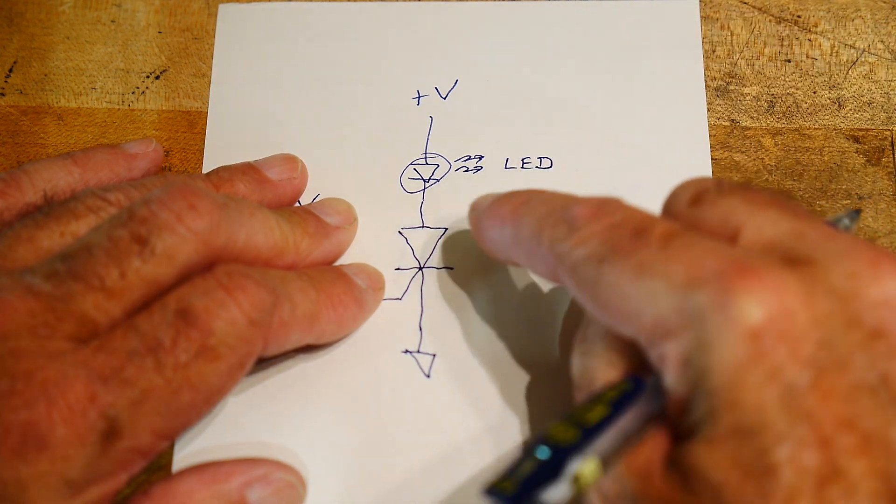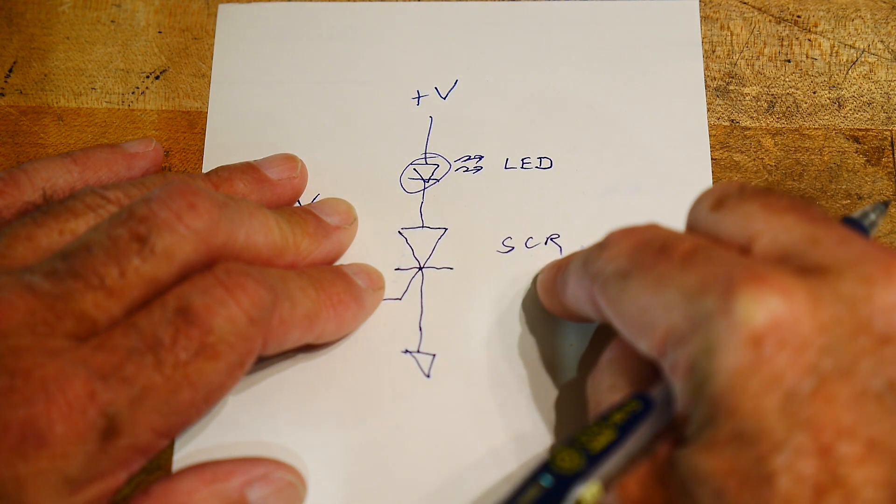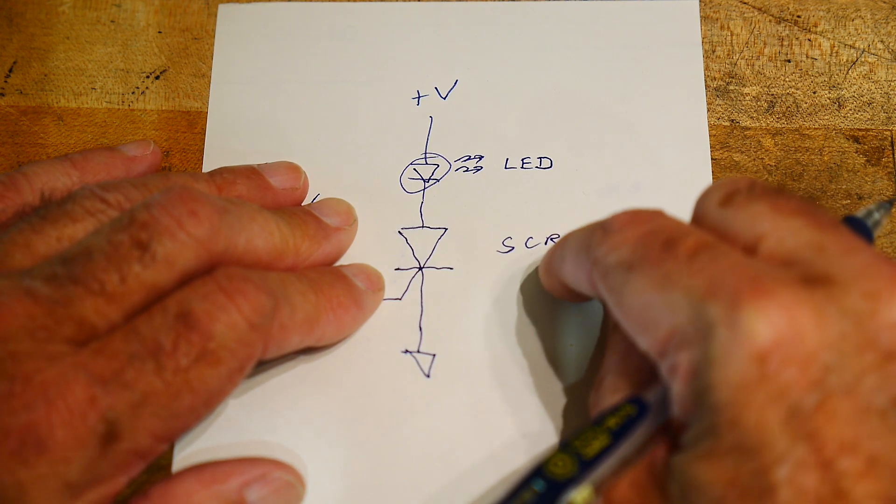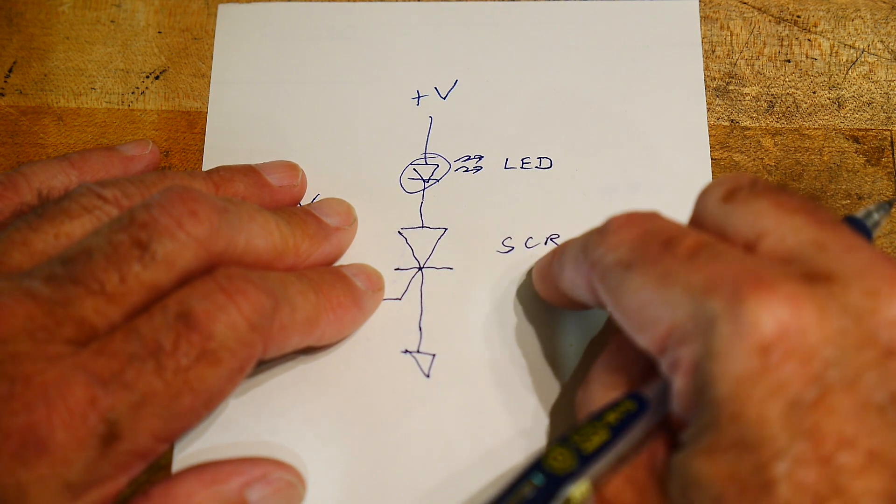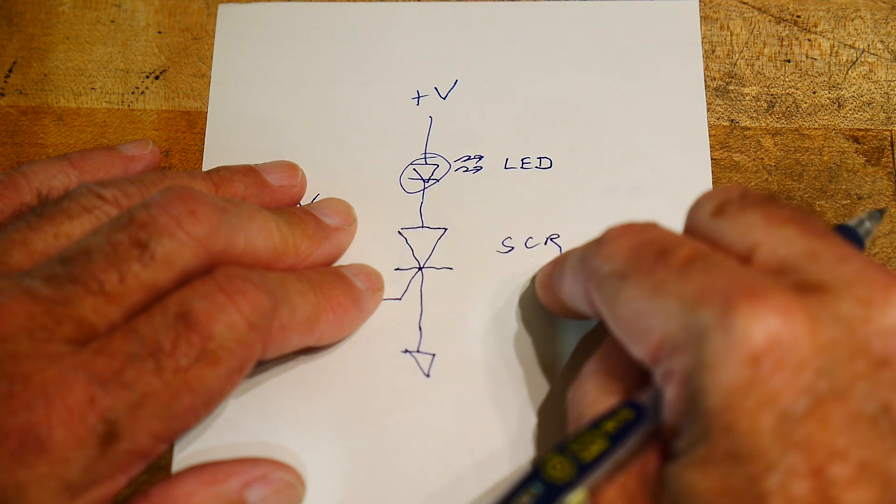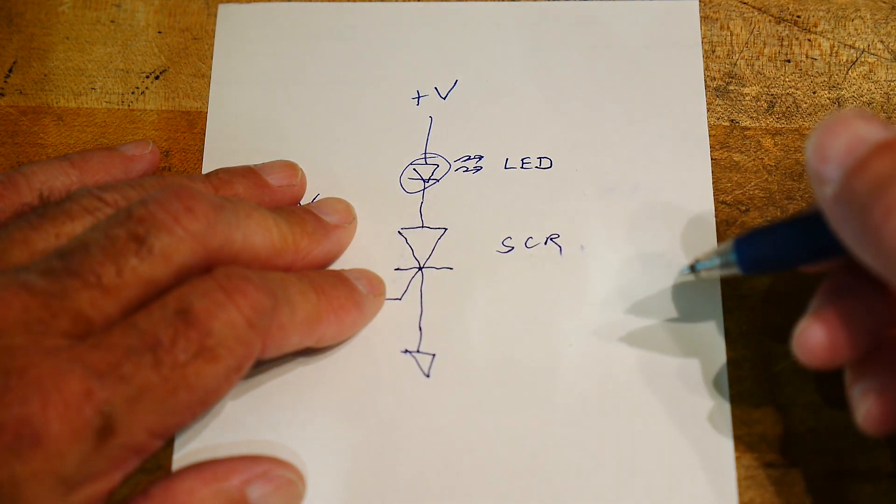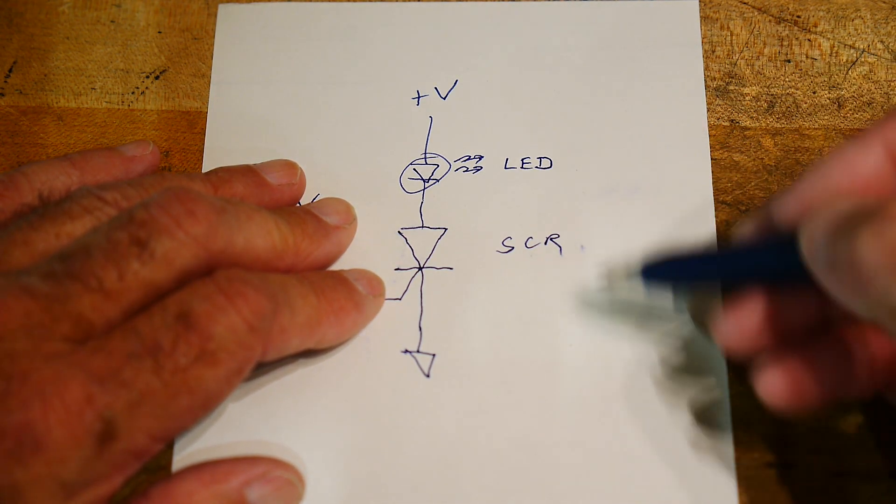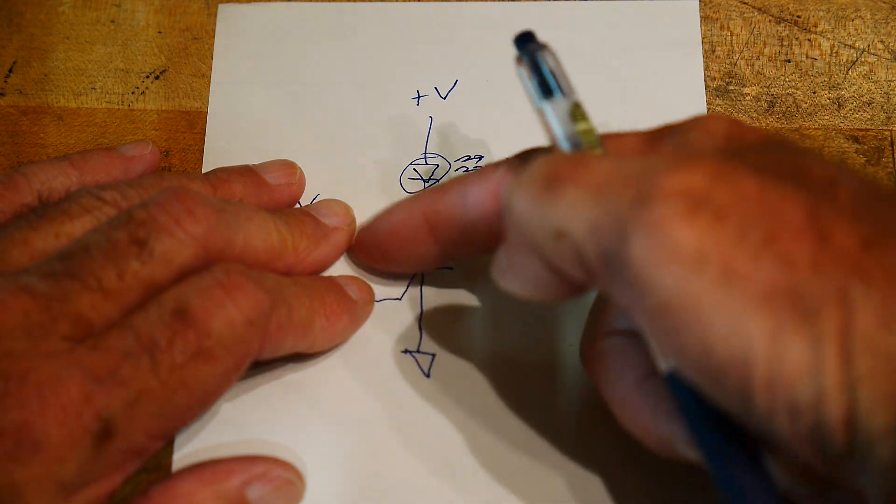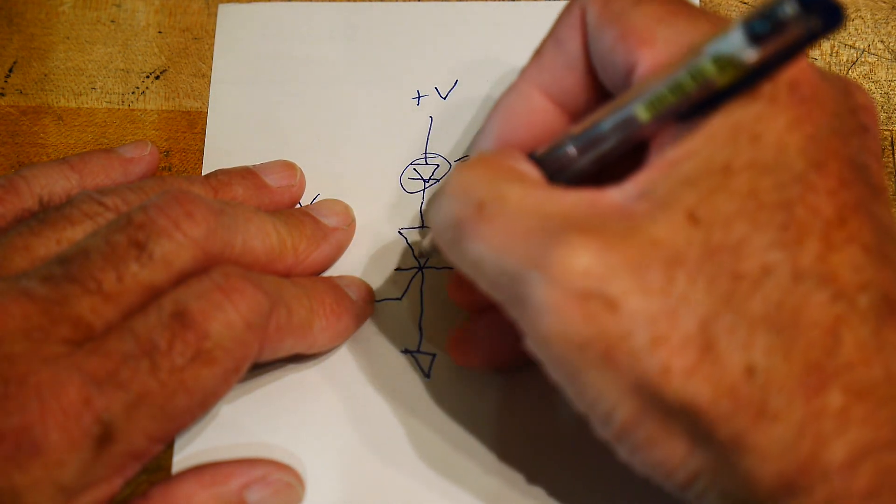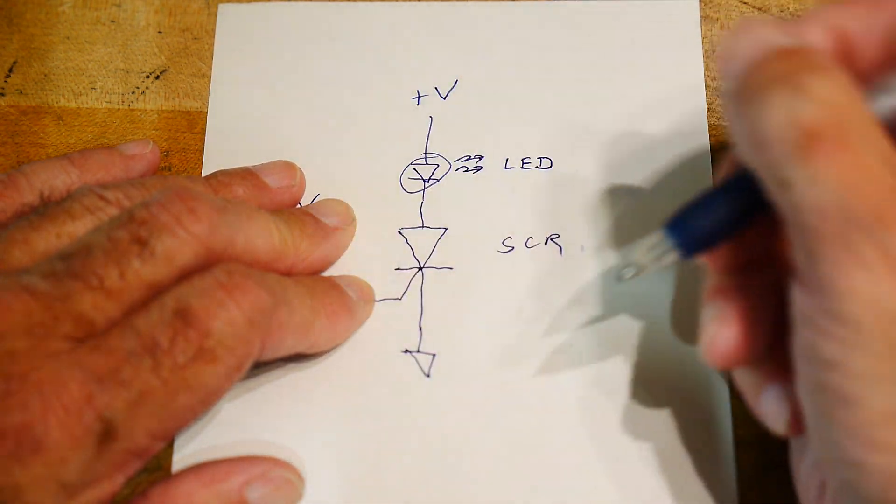But this is a silicon controlled rectifier. Now, rectifier is an old name for a diode. Back before there were diodes, there were things like selenium rectifiers, but they only allowed current to flow in one direction and that's why the diode symbol is in the shape of an arrow. The current only flows in one direction.